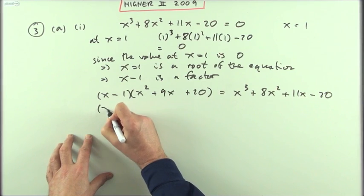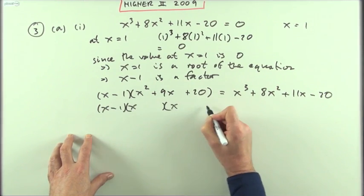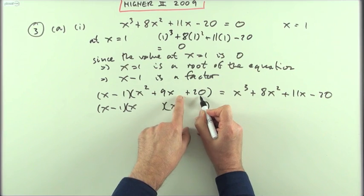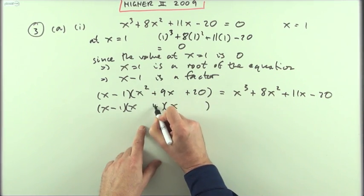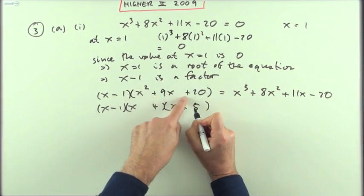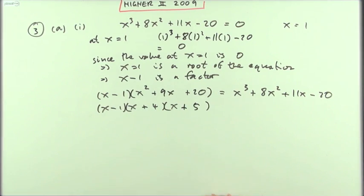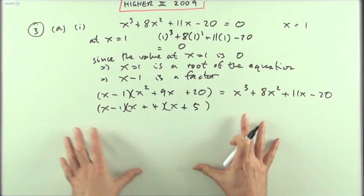Then factorizing that fully: (x - 1), and then x times x, factors of 20 that add up to 9 - 4 and 5, biggest one's positive, they're both positive. Then get the factorization. Well, that would be one way.